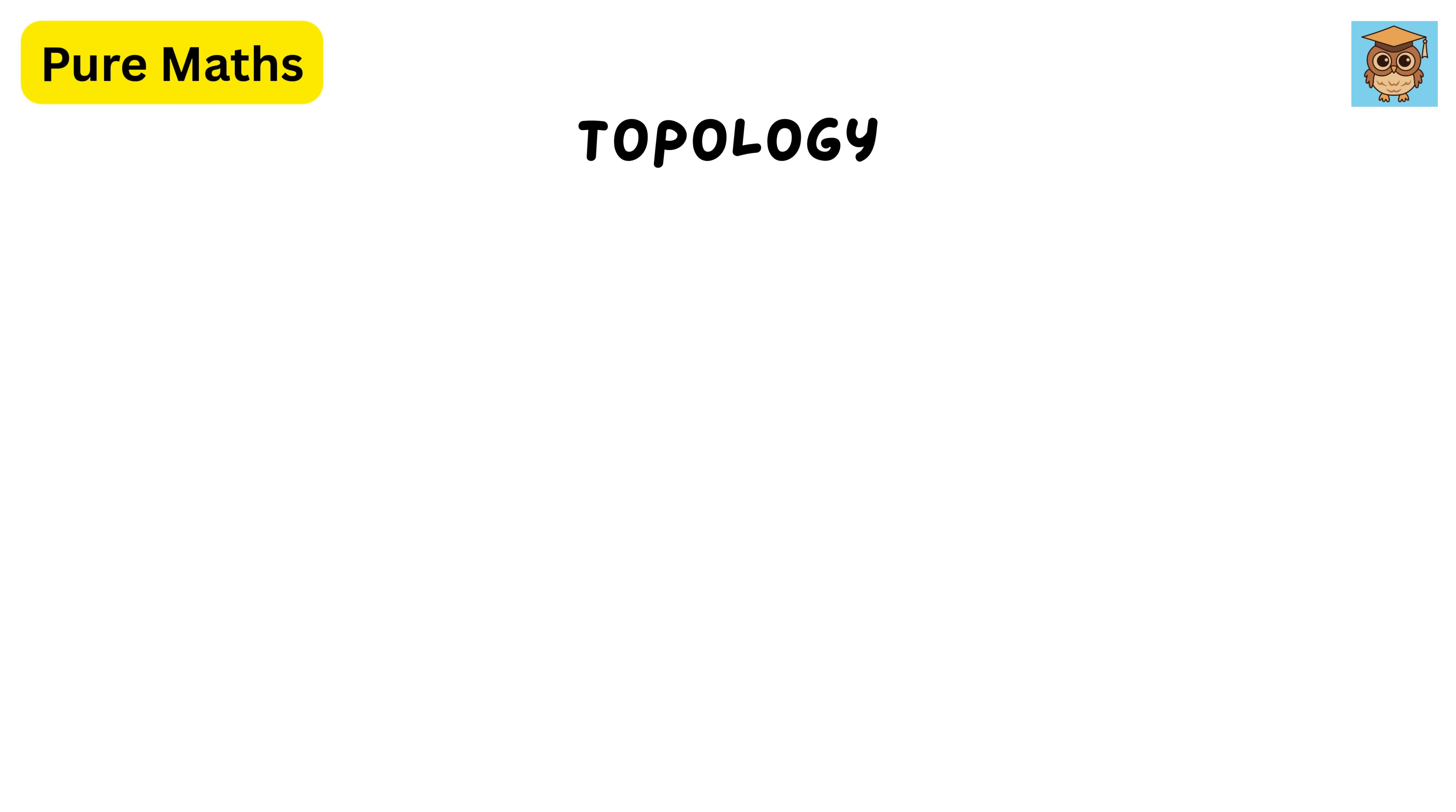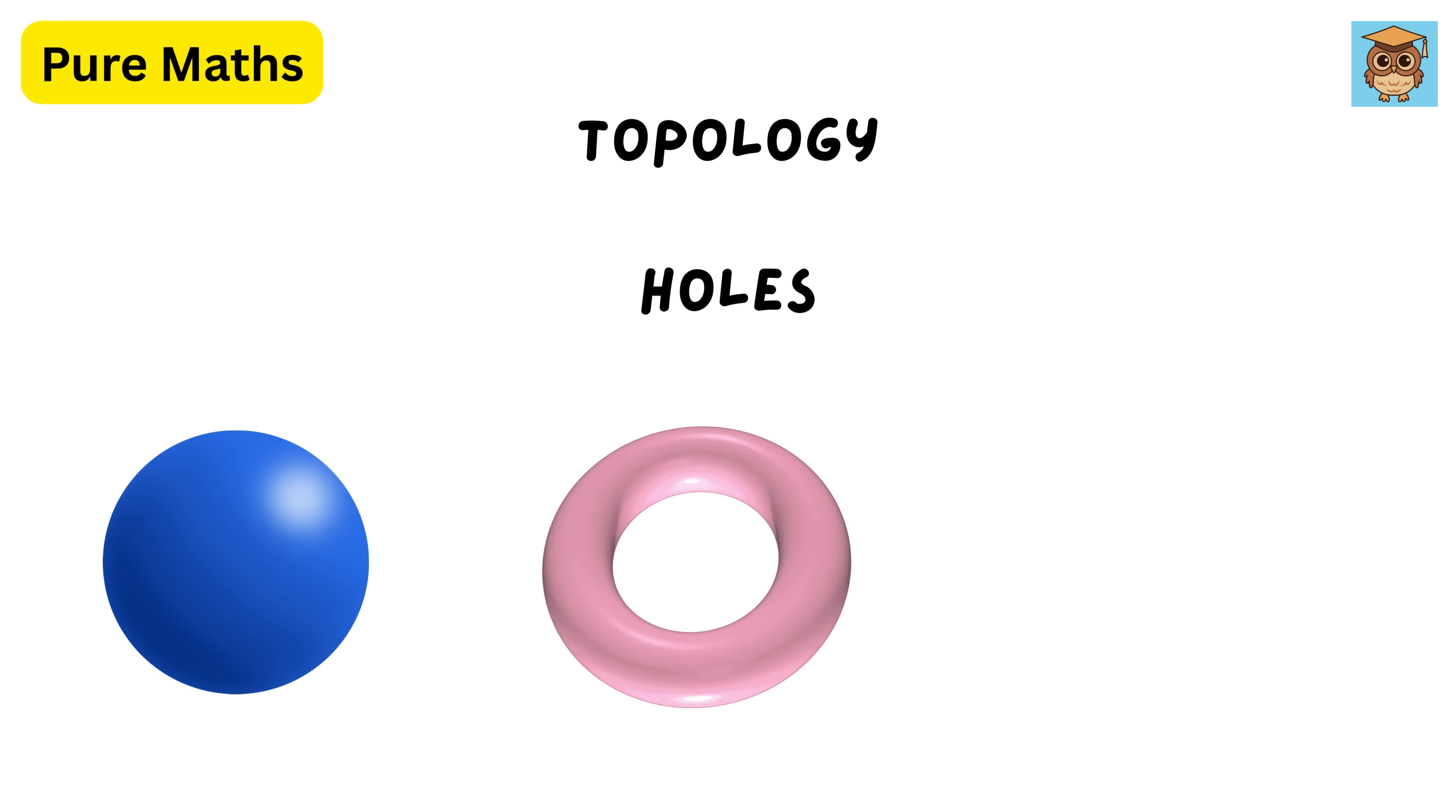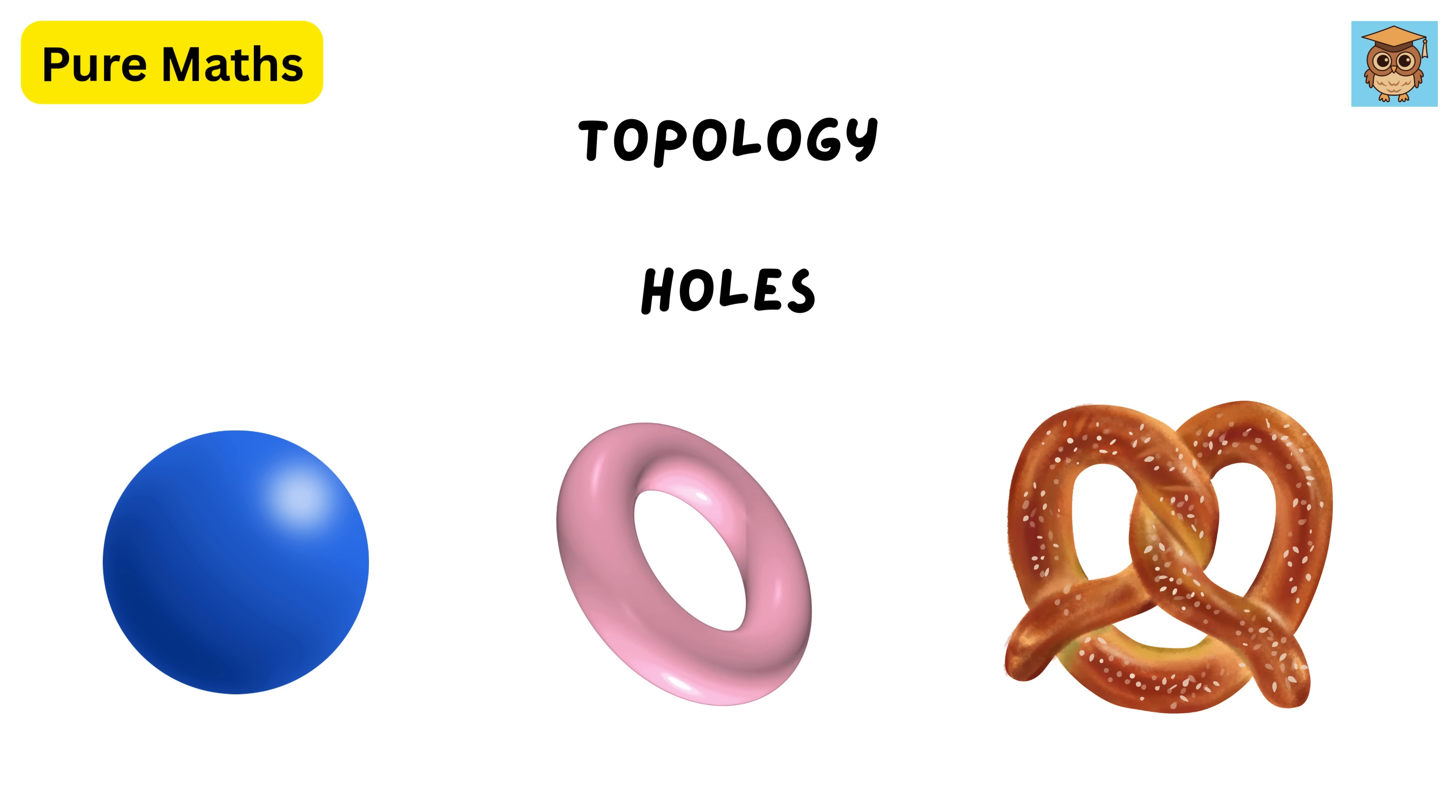Key ideas in topology include connectedness, like a circle is connected. Two separate dots aren't. Then holes, like a sphere that has no holes. A doughnut, also called a torus, has one hole, and a pretzel has more holes.